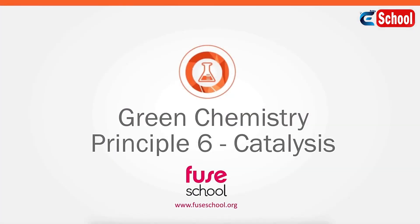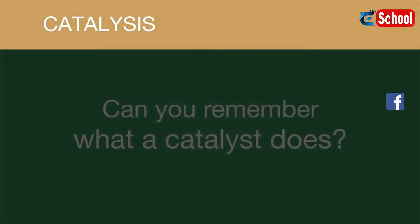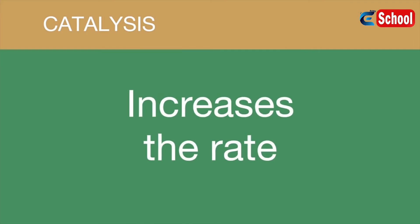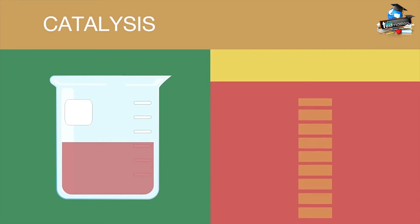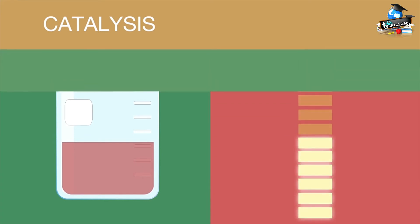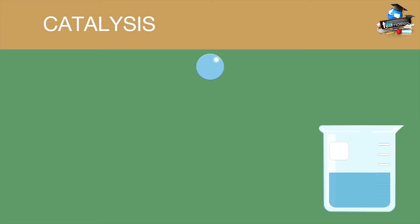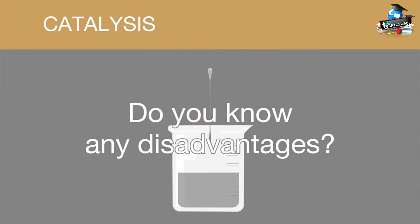Catalysis. A catalyst increases the rate of a chemical reaction, meaning that desired products can be made more quickly by using a lower energy pathway. The catalyst is also regenerated, so it can be reused over and over again. However, despite these advantages, there are disadvantages to using catalysts. Catalysts can often be expensive, and in some cases made of toxic metals. In the case of a biological catalyst known as an enzyme, it can be very selective about the chemicals it's exposed to and might only work in a narrow temperature range.